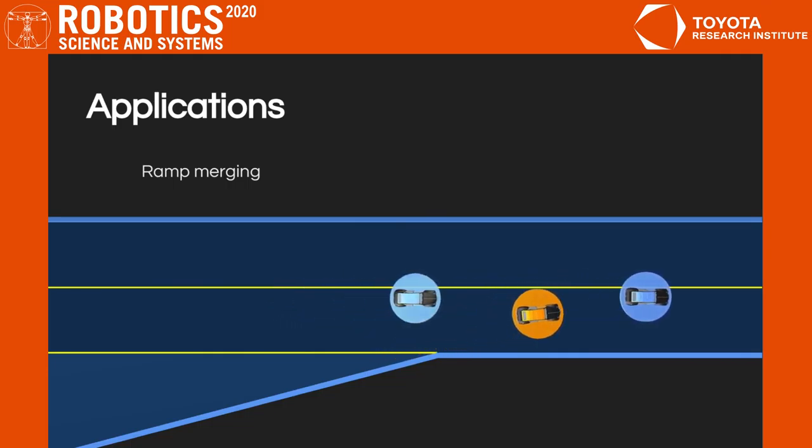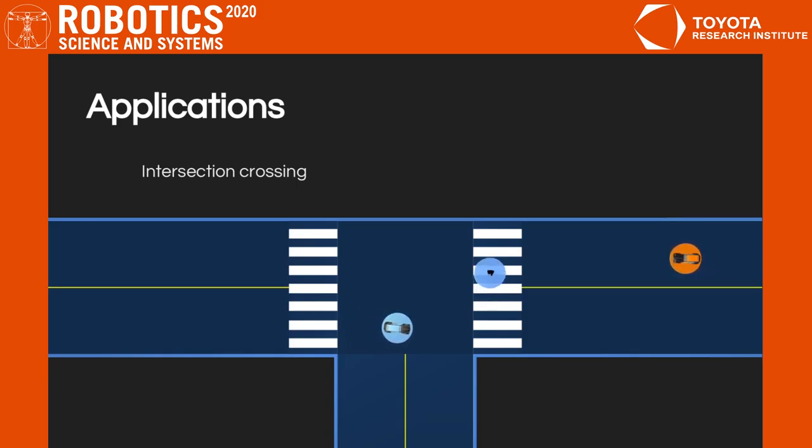We use unicycle dynamics and we enforce collision avoidance constraints. We construct individual cost functions by summing a quadratic cost on the state and control variables to a non-convex cost on being too close to other vehicles.